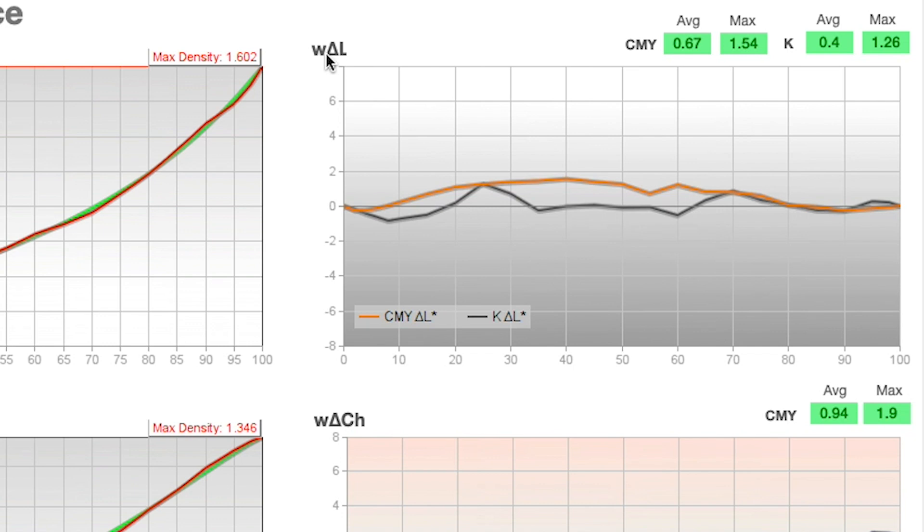This is a good pass. That means we have a good weighted delta L. It's within the tolerances that you see up here for the CMY for your average and max, and then the black average and max for both your CMY and your black.